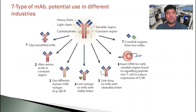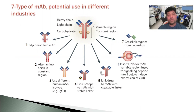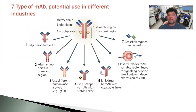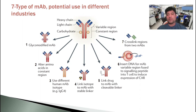There are seven different types of monoclonal antibodies potentially used in different industries: glycomodified monoclonal antibodies; altered amino acids in the constant region; use of different human monoclonal antibody isotypes; linking an isotope to monoclonal antibodies with a stable linker; linking a drug to monoclonal antibodies with a cleavable linker; inserting DNA for monoclonal antibodies using a variable region signaling peptide into the T-cell to induce expression of the CAR; and cross-linking regions from two monoclonal antibodies.